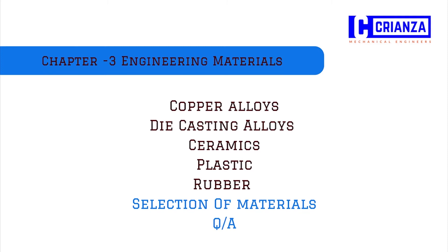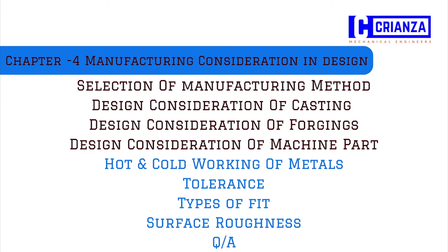In this chapter we will talk about manufacturing considerations in design: selection of manufacturing methods, design consideration of casting, design consideration of forging, design consideration of machine parts, hot and cold working of metals and their advantages and disadvantages, tolerance, and types of fit.